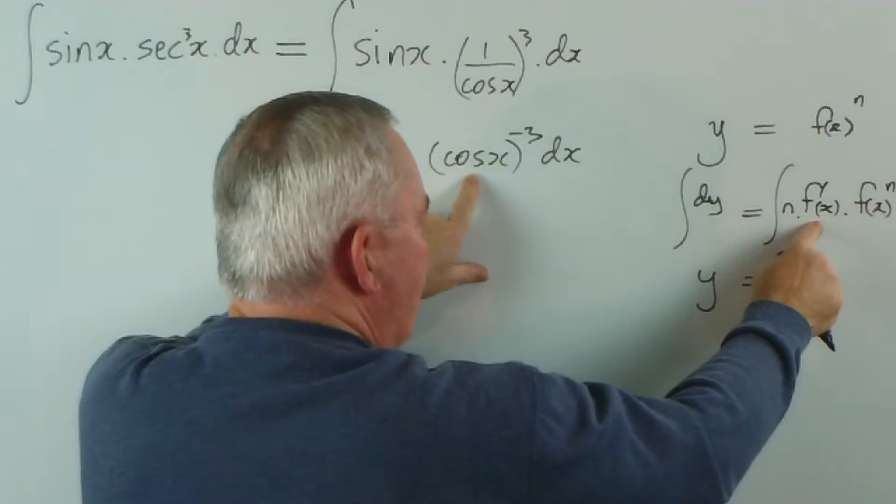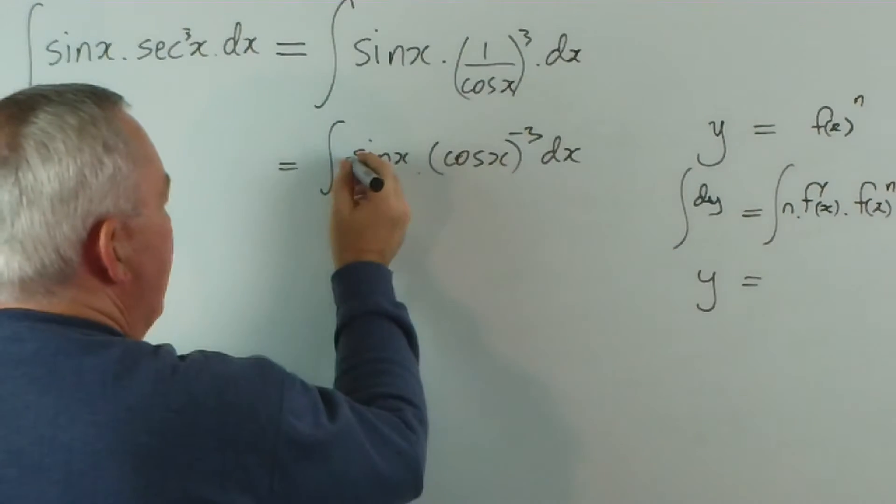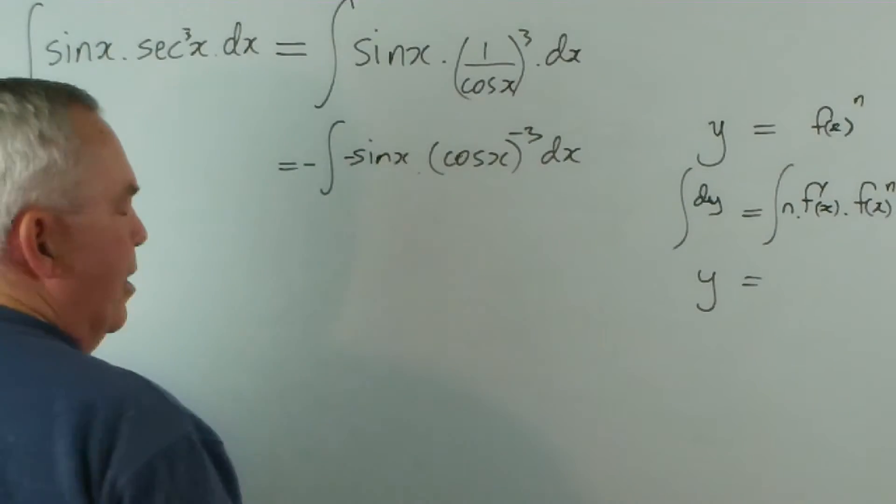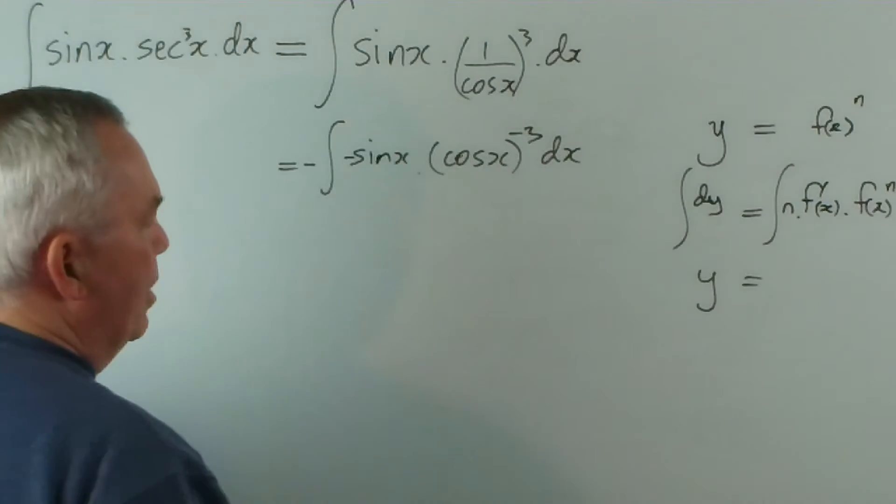And notice, my function here is the cosine of x. The derivative of the function is minus sine of x. So I'm going to put a minus here and a minus out the front. So the two minuses make a plus.